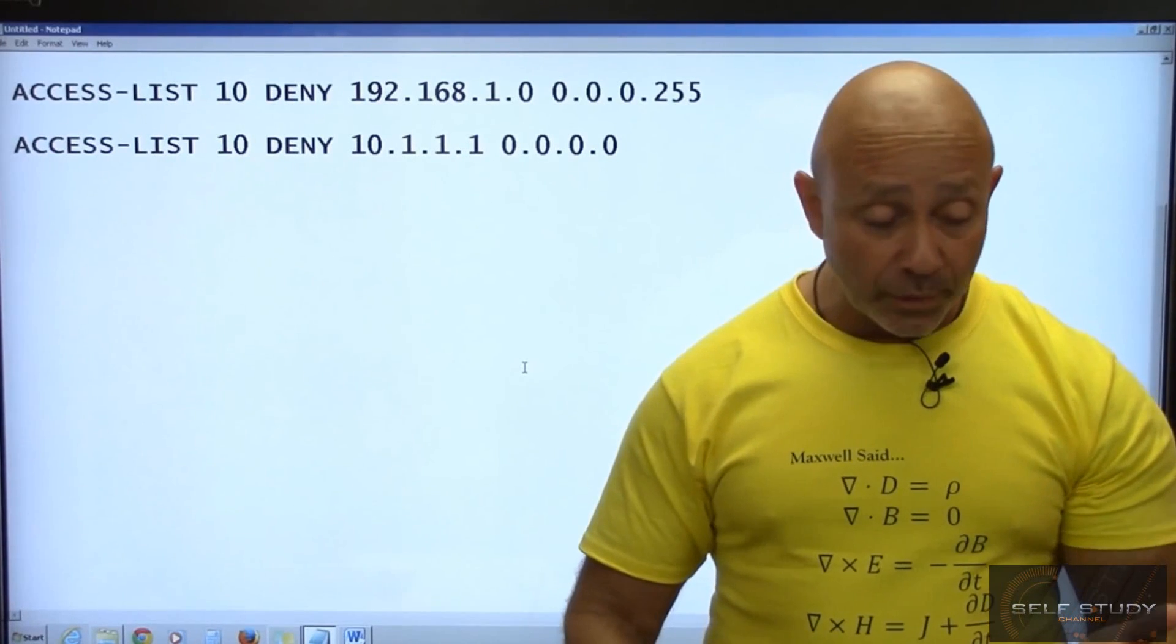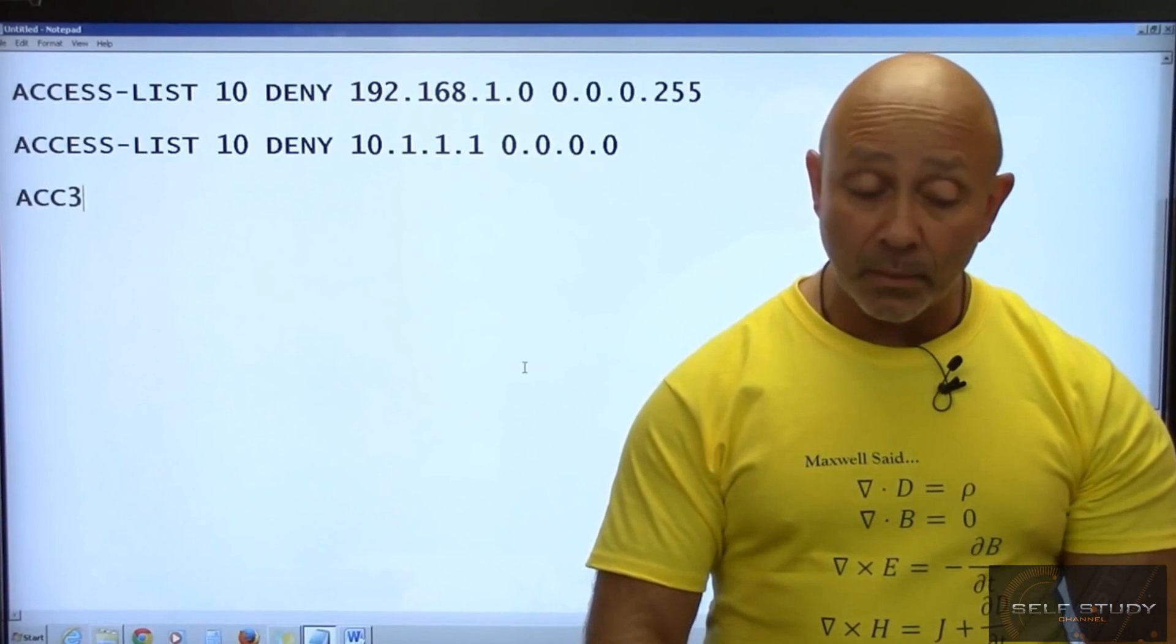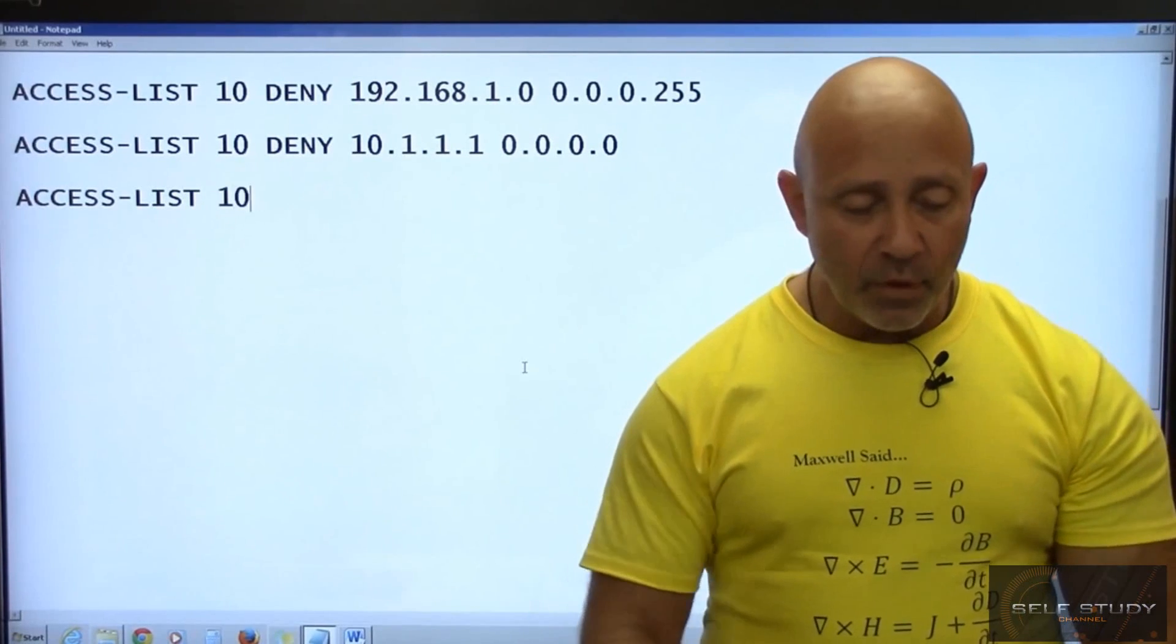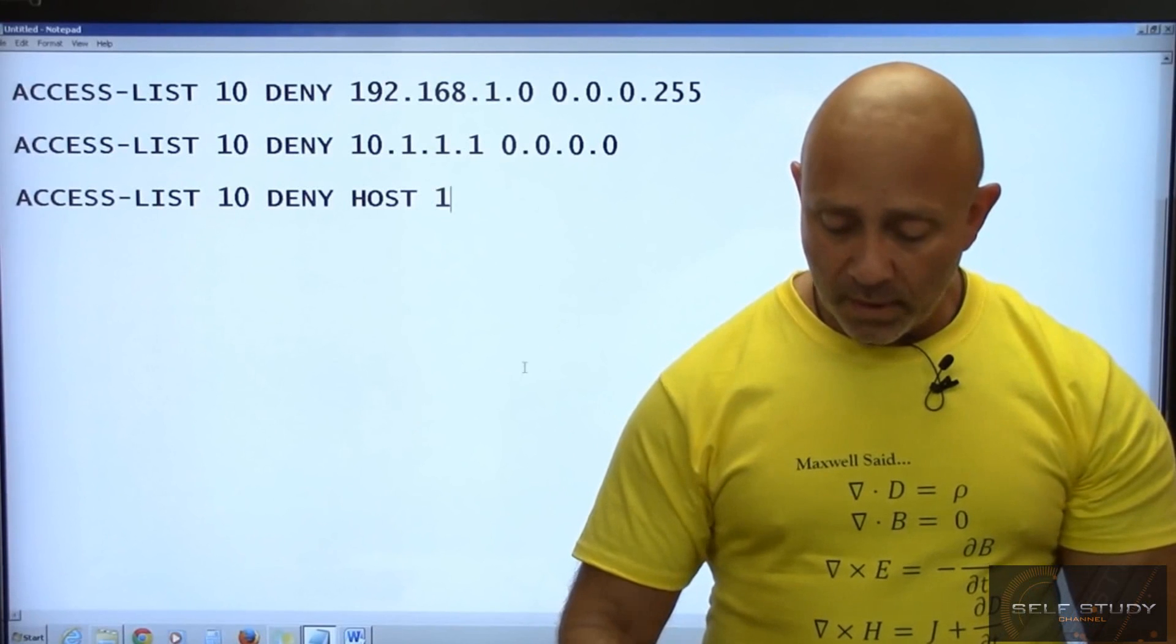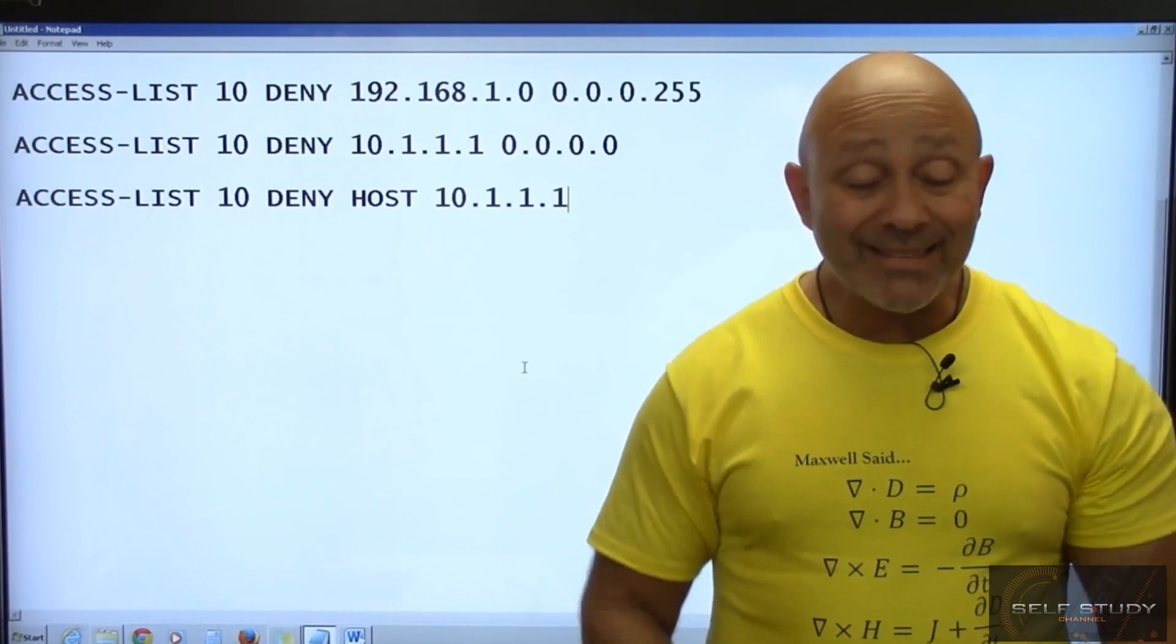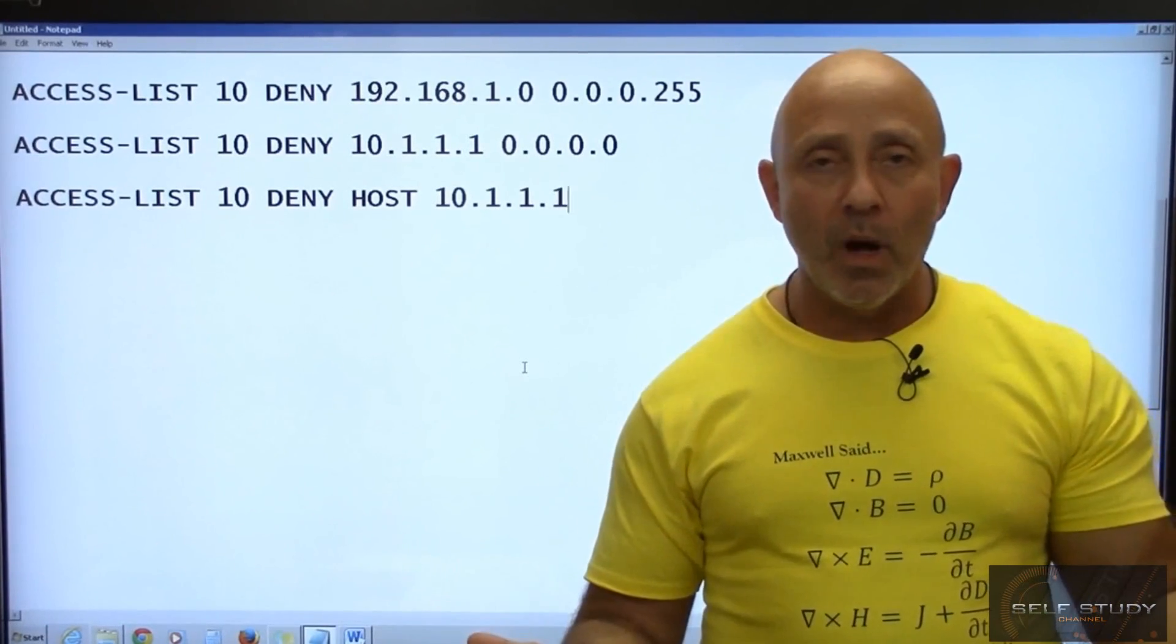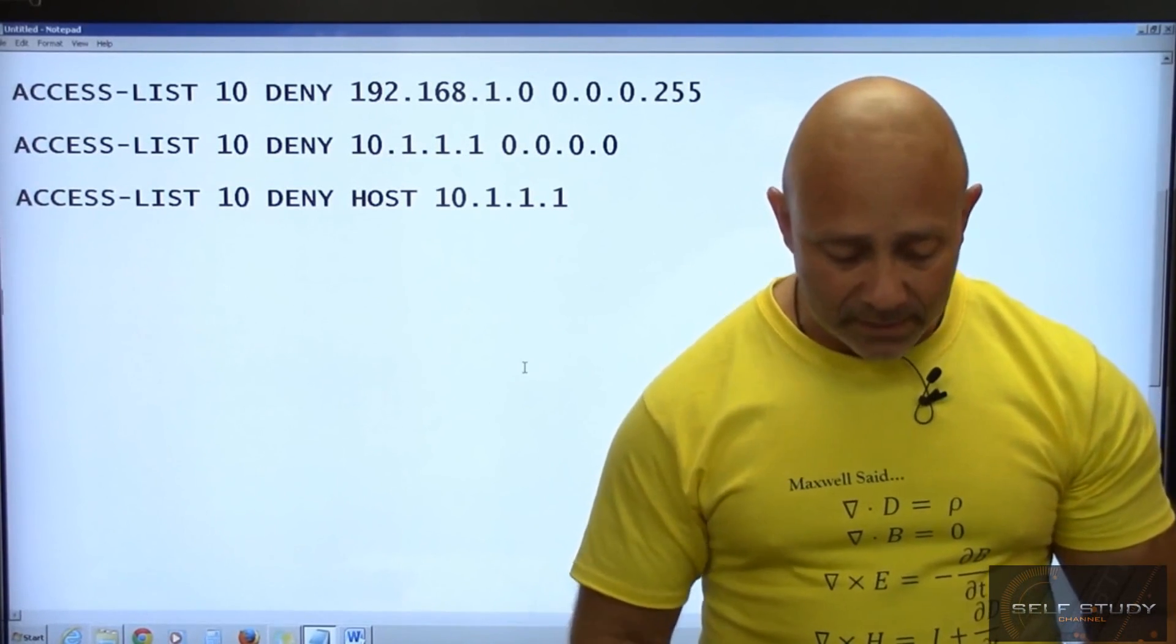Because this access list, if you look at it, which you will when we get to that part in the course, it's the same thing if you were saying DENY HOST 10.1.1.1. It's the same thing, but you're using a wildcard mask.